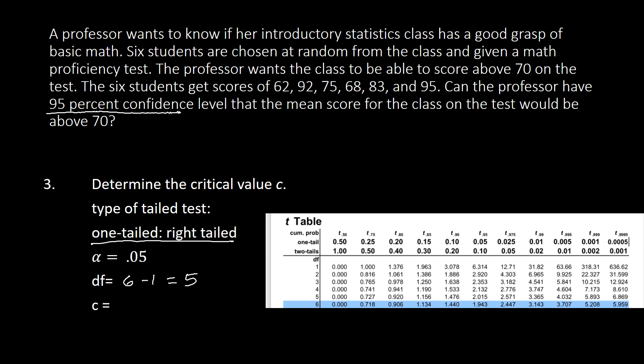So looking at df, I have this one here, and then that is one tailed. So we will be locating our alpha here, or the level of significance, which is 0.05, and that is here. We move down and then move across from the df so that we can get the intersection, and that will be our critical value. So since this is right tailed, this is positive 2.015.